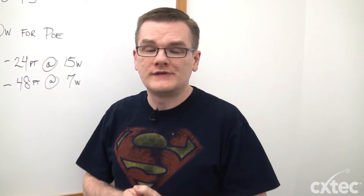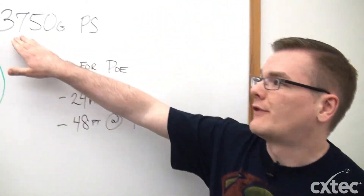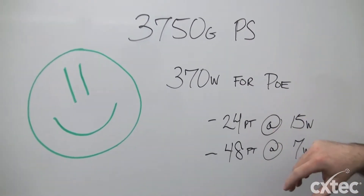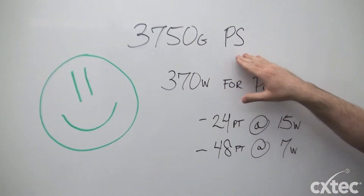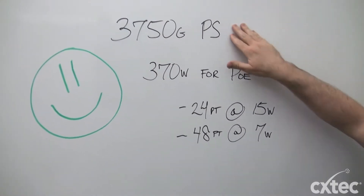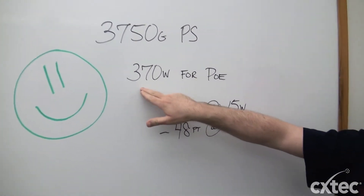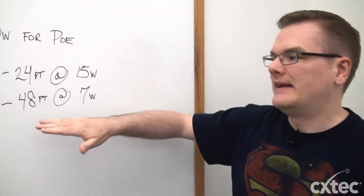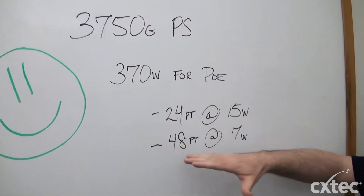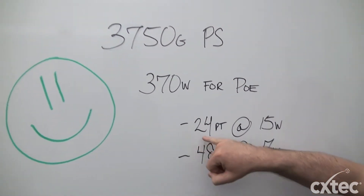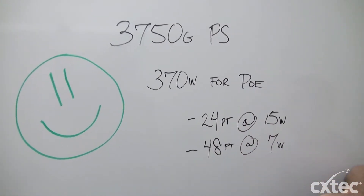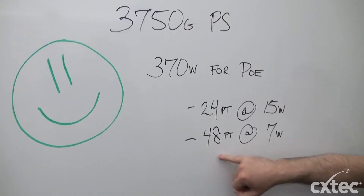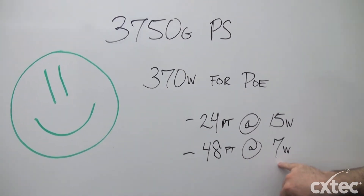Here's a real-world example. The Cisco 3750GPS — a 48-port version — is our model switch for looking at these power numbers. 370 watts is available for PoE from that power supply. So how does that break down? If you put as much PoE as you can on this switch, that means for 24 ports you can do 15 watts each. But if you want PoE on all 48 ports simultaneously, the max would only be 7 watts per port.